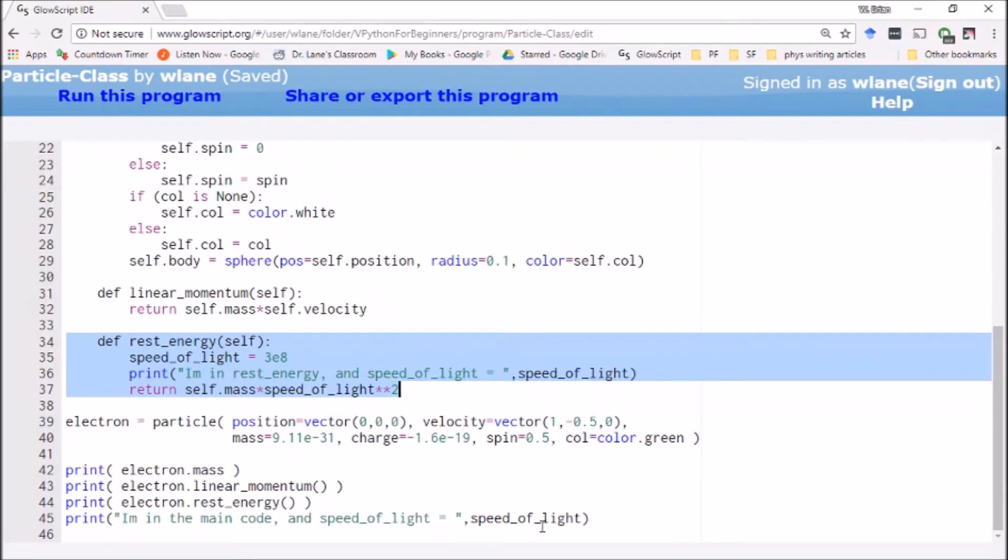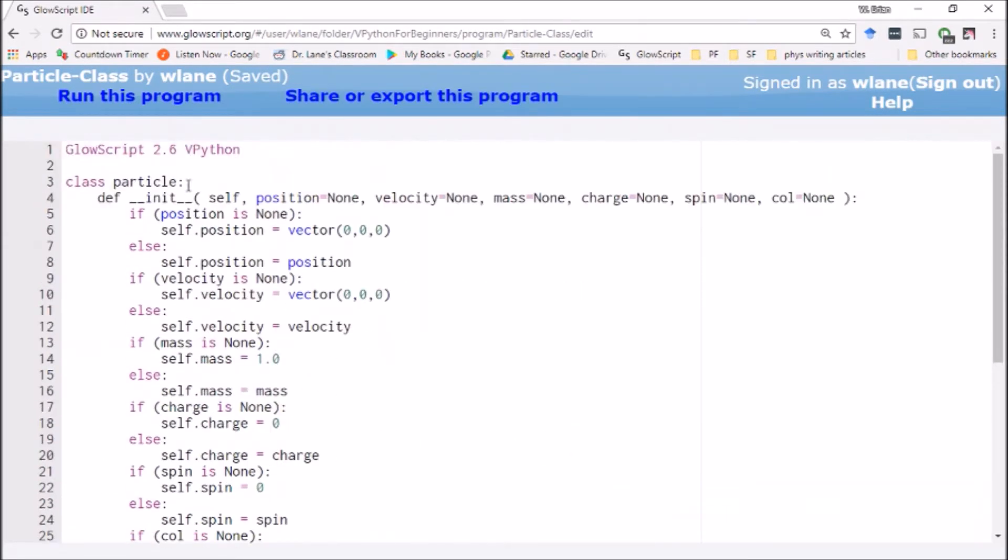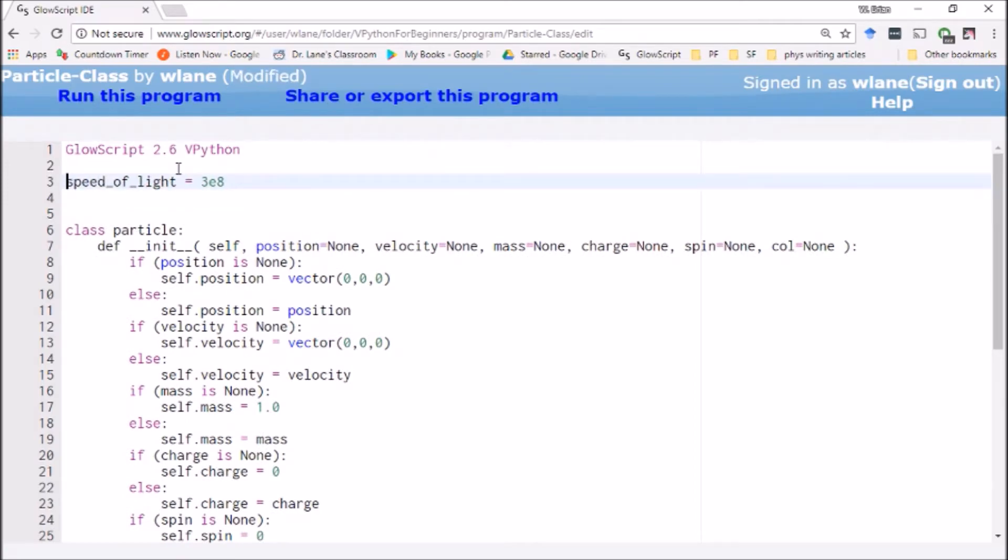Now you might say, but I want to be able to access the speed of light later on. I mean, it's the speed of light. It comes up in a lot of calculations. There is another way to do this. And let me show you what you'd do. You would take this, we're going to cut it out of here. We're going to scroll up to the top and we're going to paste it in here. So we're going to define the speed of light here.